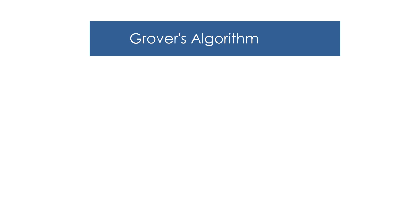Today we are going to learn about Grover's algorithm. Grover's algorithm is a search algorithm that searches through a list of items for a specific item that satisfies a given query. It is a process of increasing the probability of observing the item being searched.